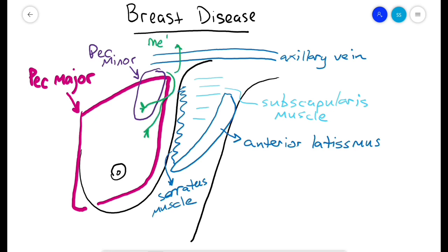The pectoralis minor muscle is behind the pec major, and the medial pectoral nerve and artery are usually encountered just lateral to the pectoralis minor during surgery.